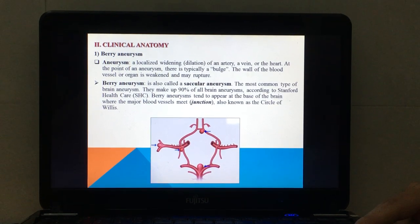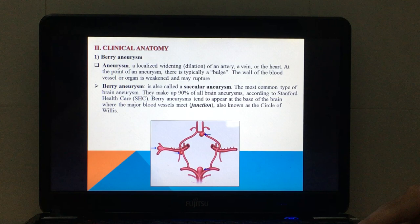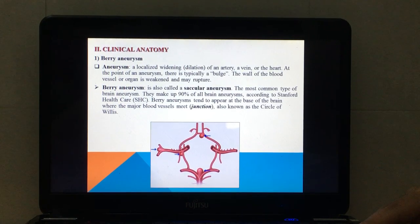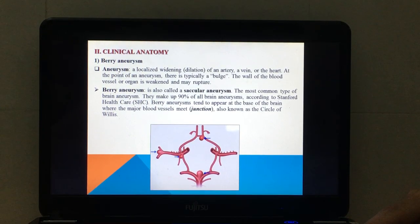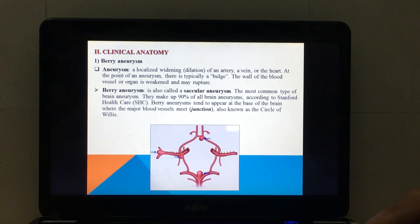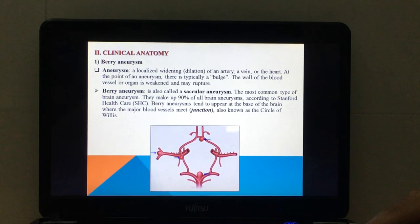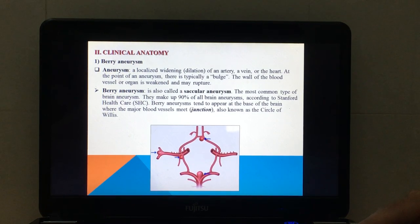This is one of the most common types of brain aneurysm. They make up 90% of all brain aneurysms according to Stanford Healthcare. Berry aneurysms tend to appear at the base of the brain where the major blood vessels meet, we call it a junction, also known as the Circle of Willis.